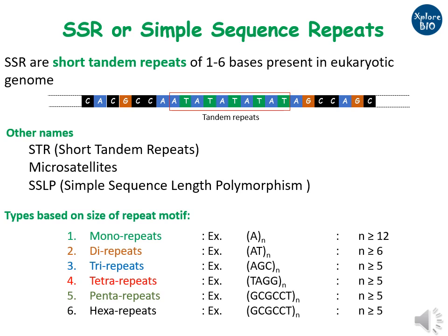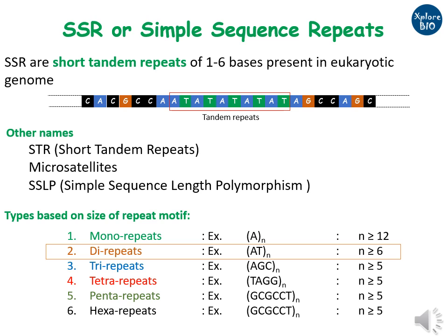Based on repeat motif length, SSRs may be mono-, di-, tri-, tetra-, penta-, or hexa-repeat. For example, AT is a di-repeat if it is found continuously in a single stretch for at least 6 times. For molecular studies, mono-repeats are not well suited because of stuttering or smearing effect and poor resolution on gels. However, di-repeats are more suited because they show more variation than the rest.